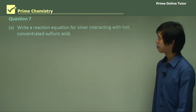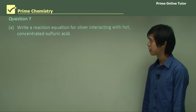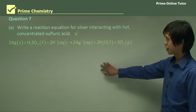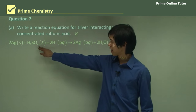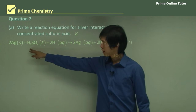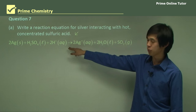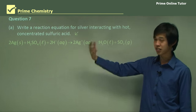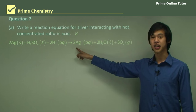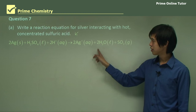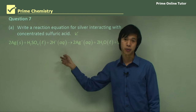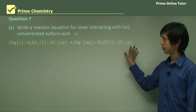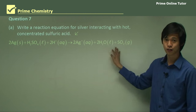Question seven: write a reaction equation for silver interacting with hot concentrated sulfuric acid. It's a complex reaction: silver solid and sulfuric acid liquid react — with H⁺ present as the acid draws water from the air — causing oxidation of silver to give the Ag⁺ ion. This forms water, and also produces SO₂ (sulfur dioxide). The final equation follows from knowing these components.